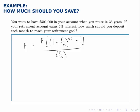Say you want to have $500,000 in a savings annuity when you retire in 35 years. If this account earns 5% interest, how much should you deposit each month to reach your retirement goal?